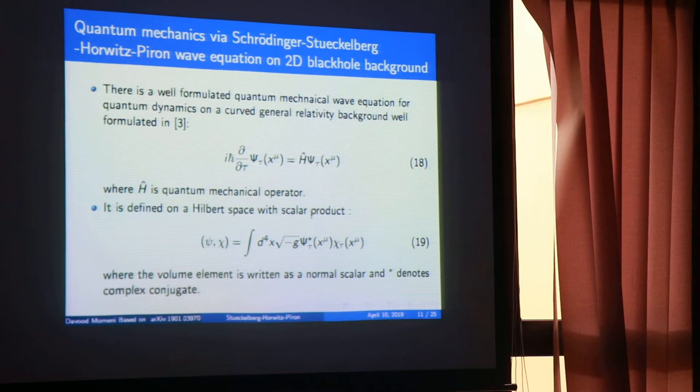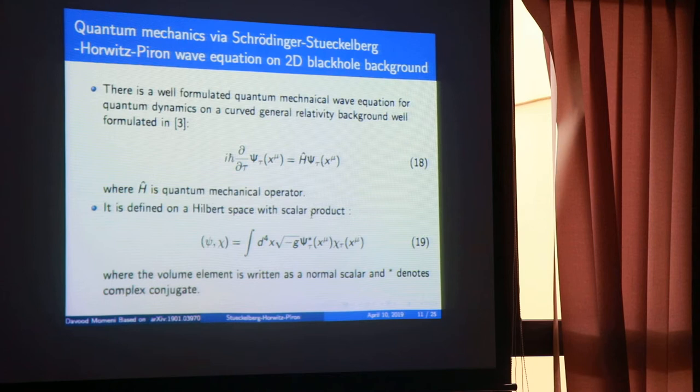This is the Stückelberg-Horwitz-Piron Schrödinger wave equation — it has four names — and it is the generalization of the Schrödinger equation for curved spacetime. It is generally covariant and respects Lorentz symmetry, making it a quantum mechanics over curved background, not quantum field theory but quantum mechanics.